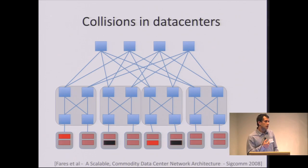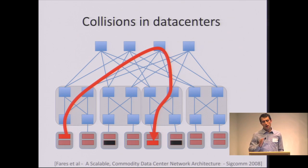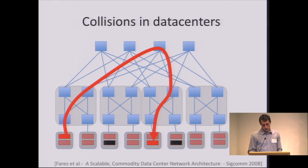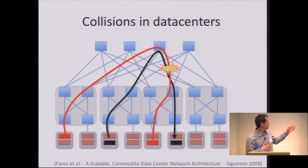Another example is in data centers. This is a fat-tree data center — a specific redundant topology proposed in research. Two servers in different racks connect and can choose out of four available paths. Normally the choice is done randomly by something called equal-cost multipath. They choose a random path and get maybe 10 gigs or 1 gig. Then two other servers also want to talk, and again choose a random path. The random choice has a non-negligible probability of putting two flows on the same path, causing a collision.